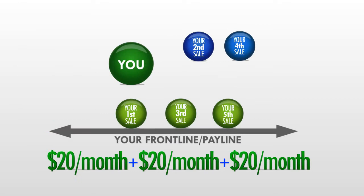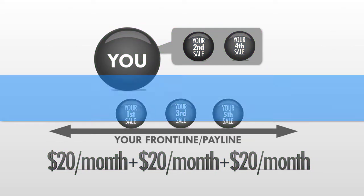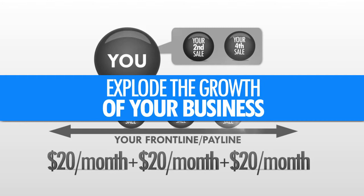So do you see the pattern here? All of your odd number sales are going to your front line, paying you $20 per month each, while all of your even number sales are rolling up. Now let's stop there for a second and see how this simple pattern can explode the growth of your business.